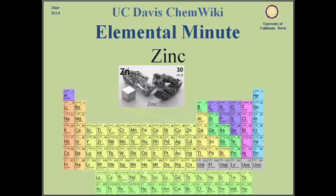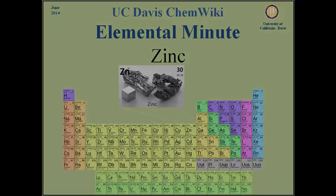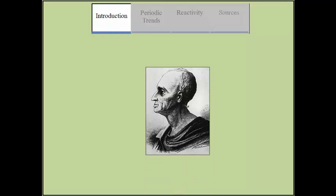Zinc is a metallic chemical element that was discovered in Germany by Andres Margroff in 1746. It can be used to galvanize other metals to prevent corrosion by providing a physical barrier from moisture.